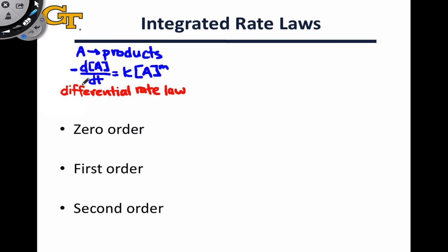Thus far we've looked at differential rate laws in detail, but this pesky dA/dt term can make differential rate laws difficult to work with experimentally, since this is theoretically an instantaneous rate of change, which is arguably impossible to measure exactly. To get this in a form that's more experimentally useful and a little bit more intuitive mathematically, we can rearrange this equation to collect all of the concentration terms on one side and all of the time terms and everything else on the other.